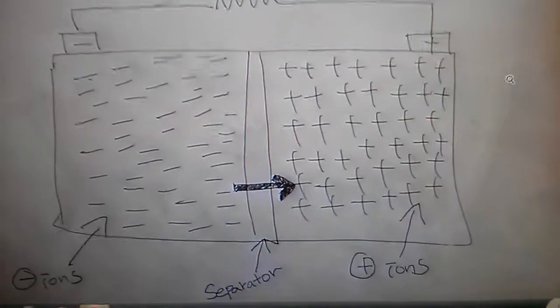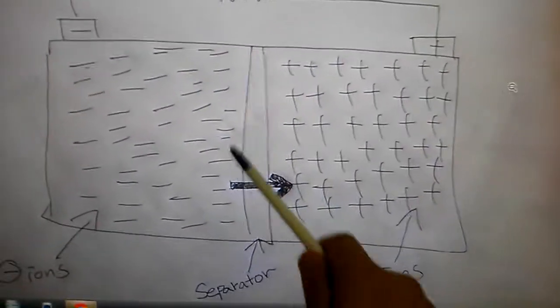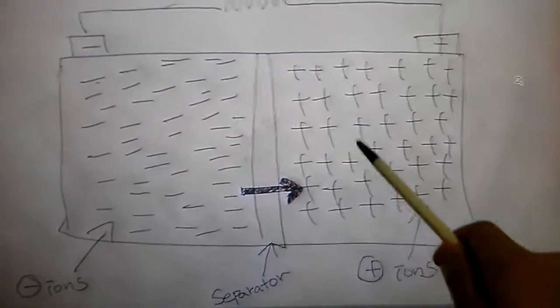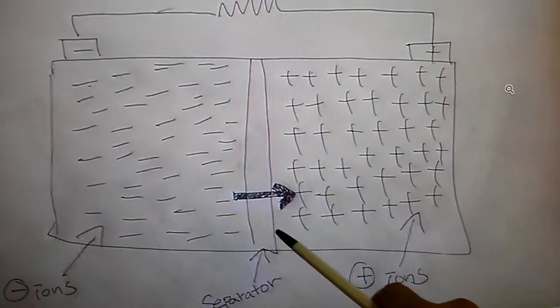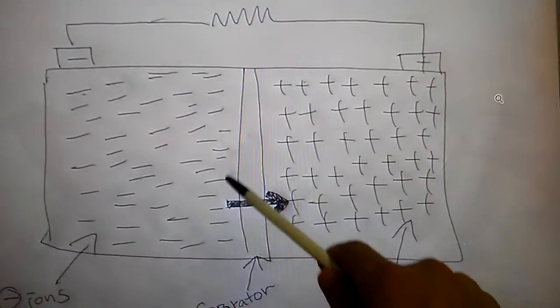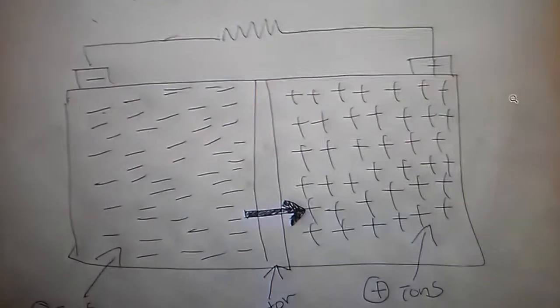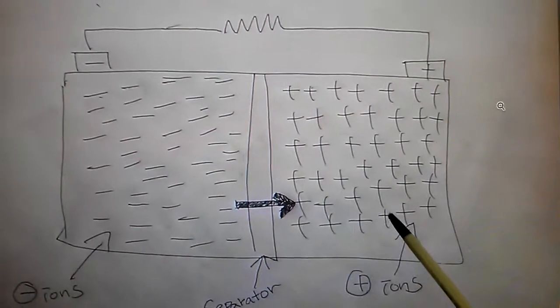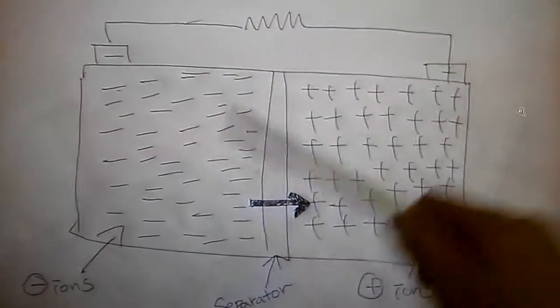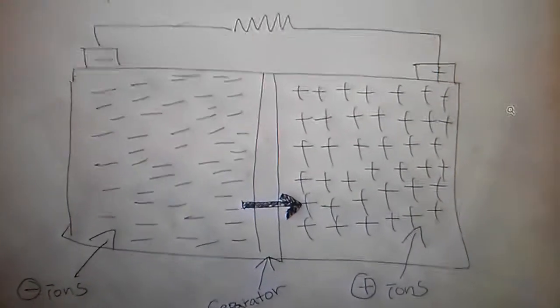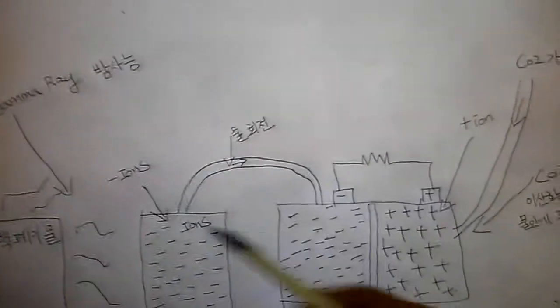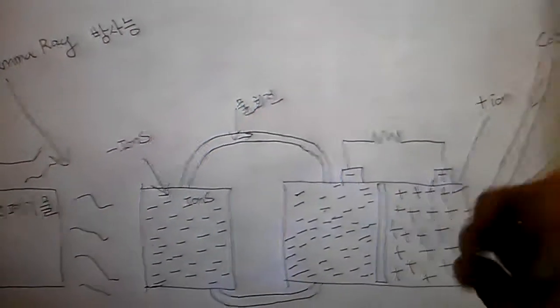If you look at the battery principle on lithium battery, alkaline acid battery, all those batteries have the same principle: you need negative ions and positive ions and a separator. When the ions emit, they give off electrons. That's the chemical reaction of the battery. So the gamma ray converts water into negative ions.